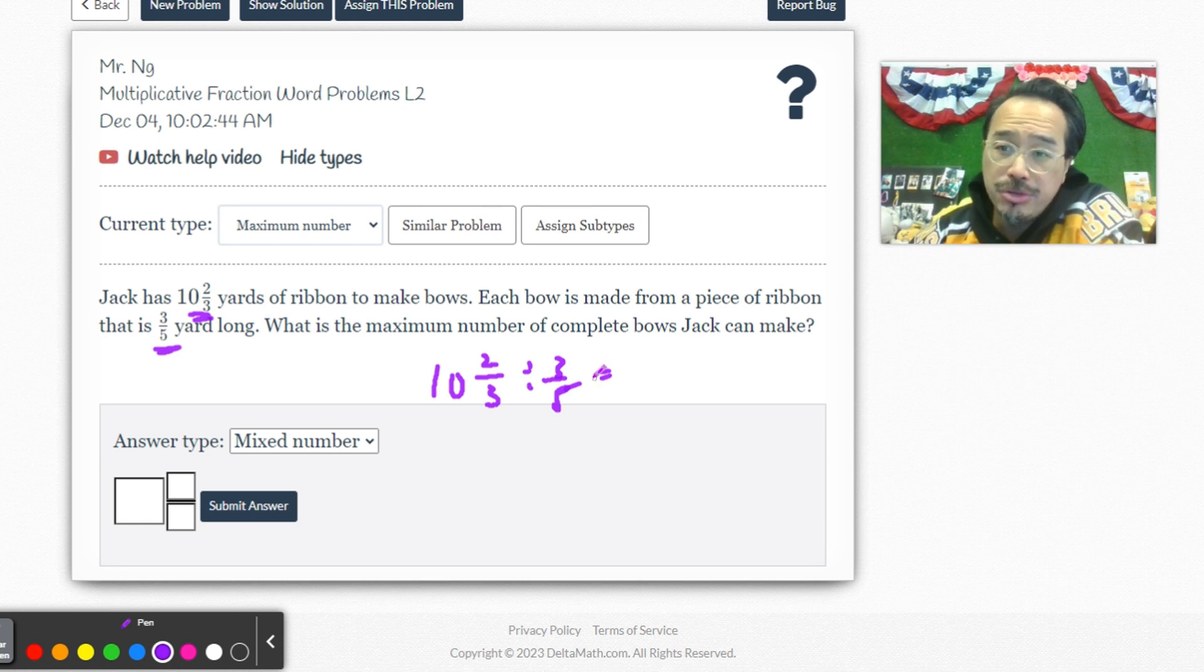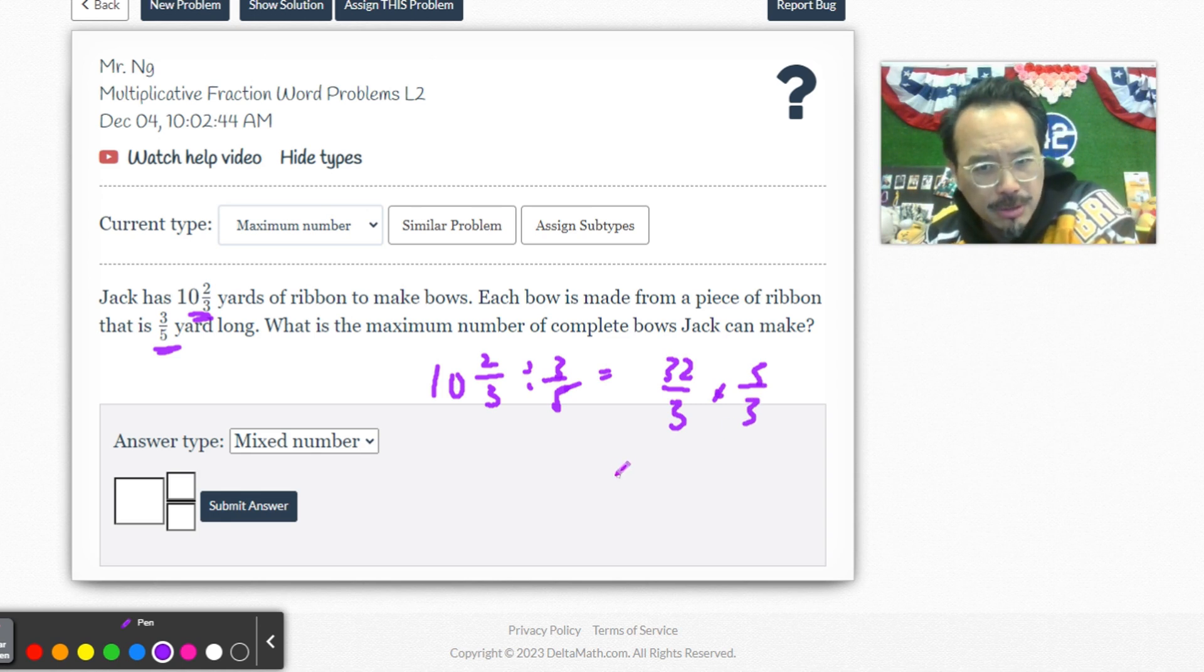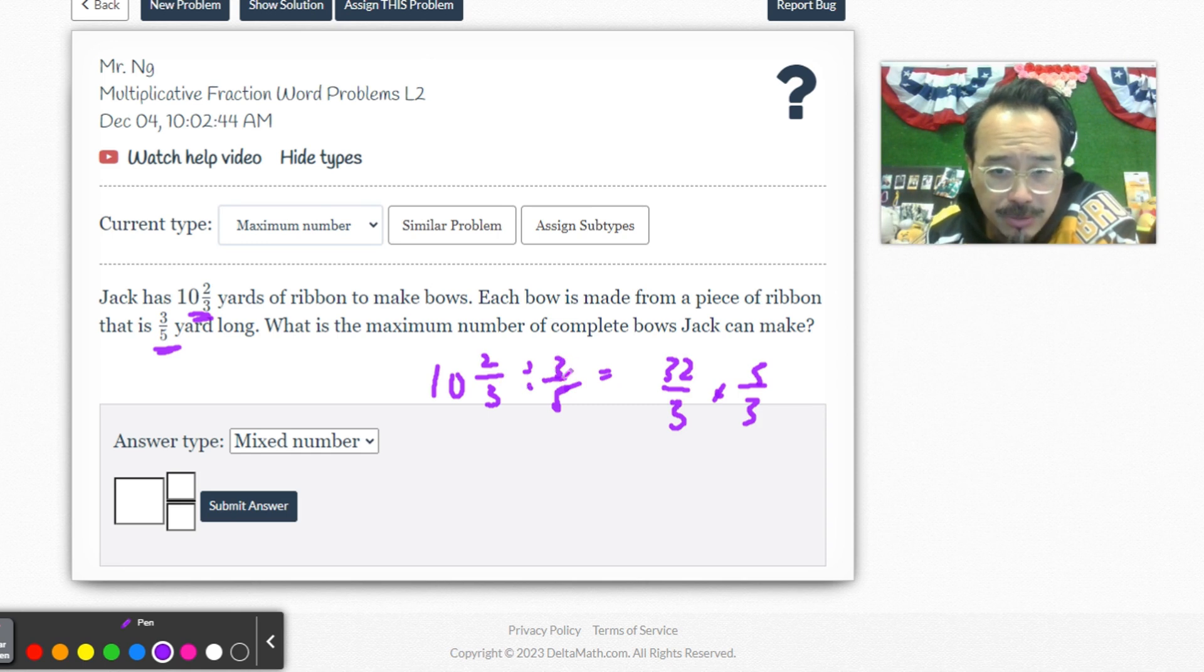Let's convert this so that's 32 over 3 times 5 over 3. We can't cross cancel. So 32 over 3, keep, change, flip: 5 over 3.